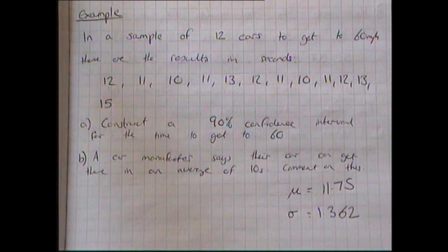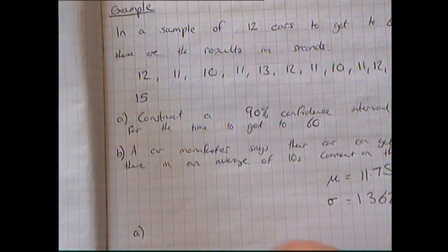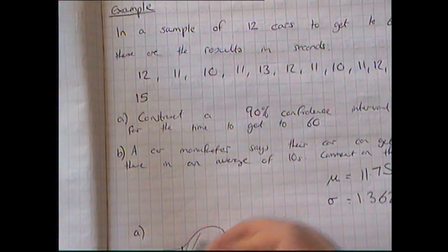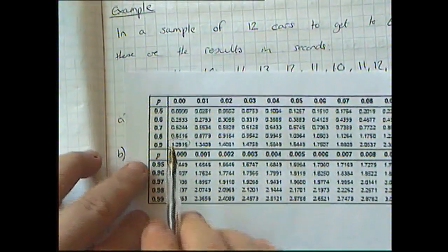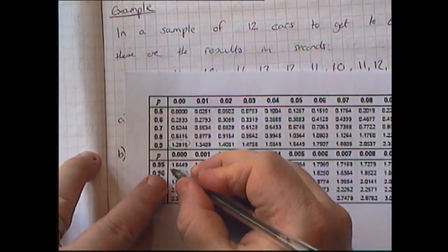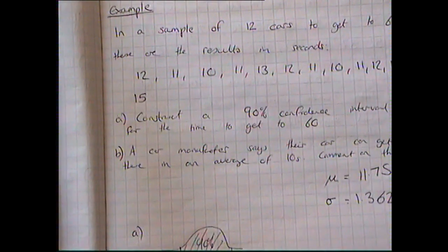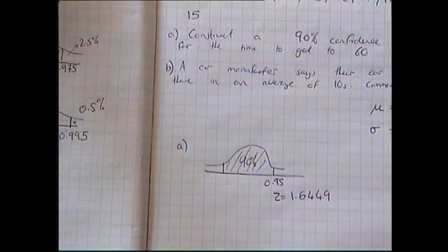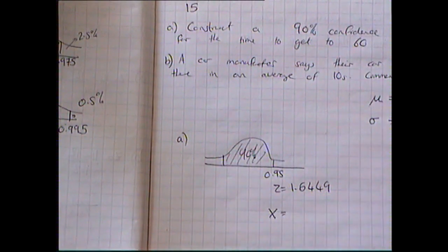I'll put my calculator back into normal mode. I always draw a diagram because it helps me picture what's going on. I want the 90% confidence interval, so I'm looking for the 0.95 value because I've got 5% either end. Using my z-table, 0.95 gives me a z value of 1.6449.